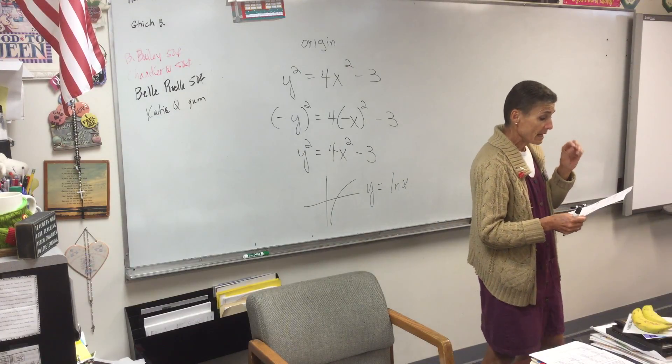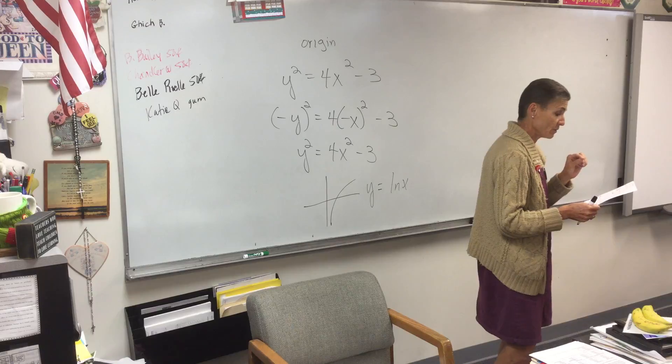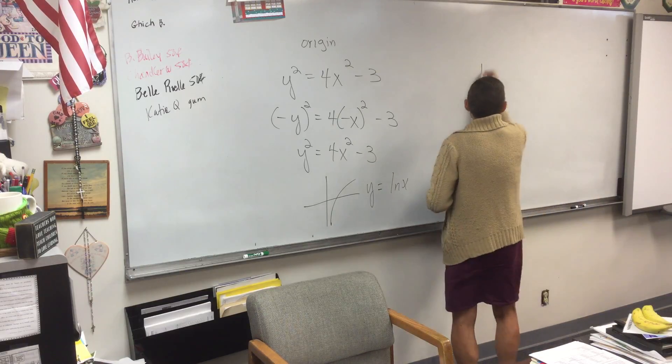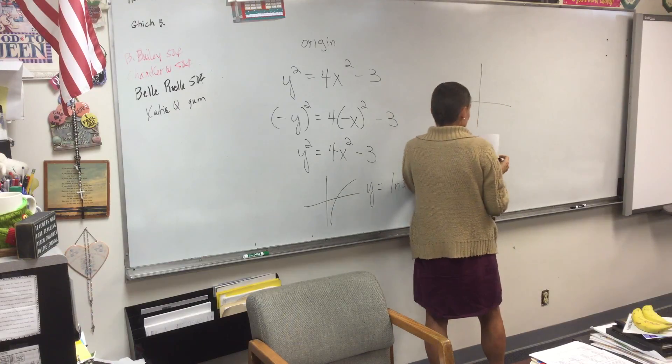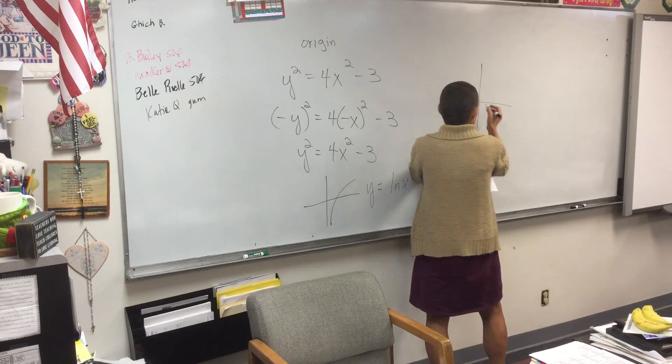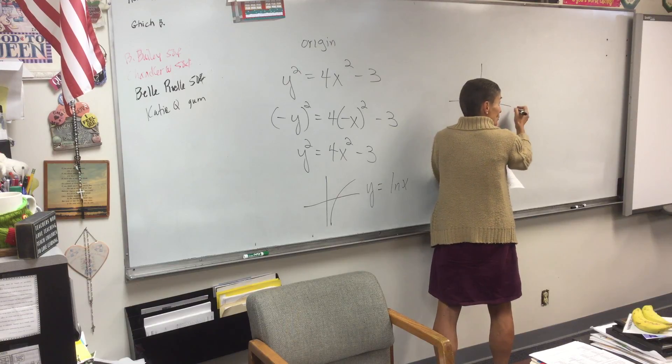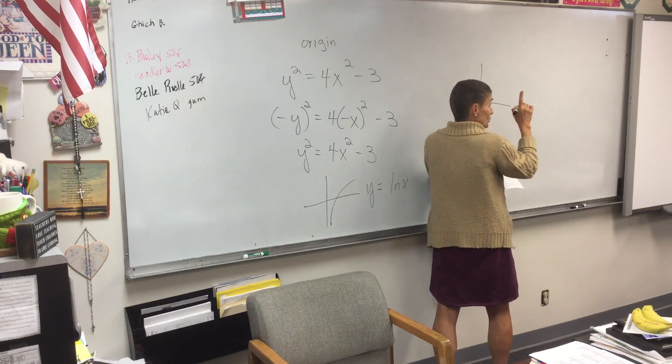Number three, name a basic function with end behavior. It's this. Now look at it, kids. What does this mean? What does the top one mean? As X goes to the right, positive infinity, X goes to the right, what is the function doing?